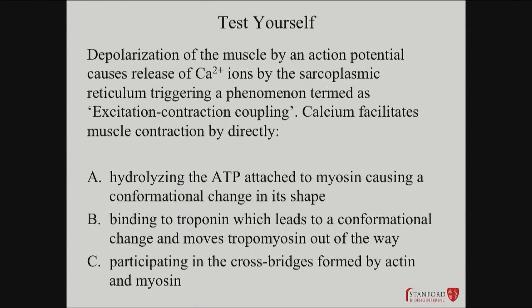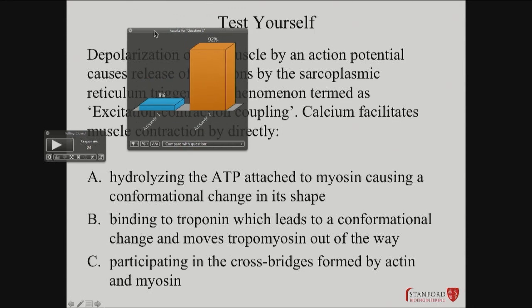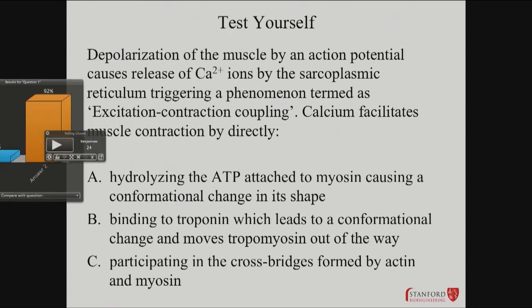So let's do a little test. Depolarization of the muscle by an action potential causes release of calcium ions by the SR, triggering a phenomenon termed excitation-contraction coupling. How does calcium facilitate muscle contraction? Calcium facilitates muscle contraction by: hydrolyzing ATP attached to myosin; binding troponin, which leads to a conformational change and moves tropomyosin out of the way; or participating in the cross-bridges formed by actin and myosin. The answer is two — troponin moves that magenta thing out of the way and allows the contraction to happen.